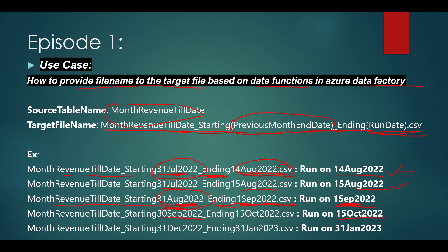Similarly, if I run on October 15th, the starting date will be 30th September and the ending date will be 15th October. If I run on January 31st 2023, the starting date will be 31st December 2022 and the ending date will be 31st January 2023. We will implement this and test it for the current use case.